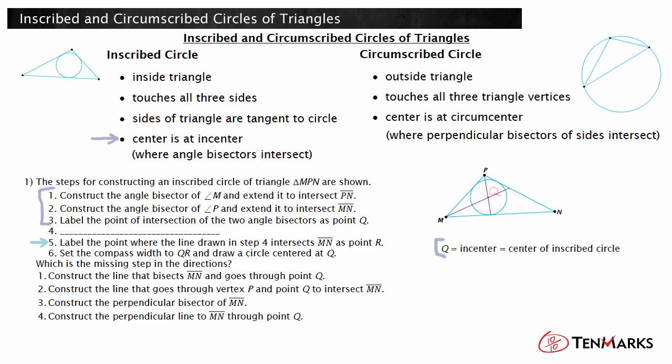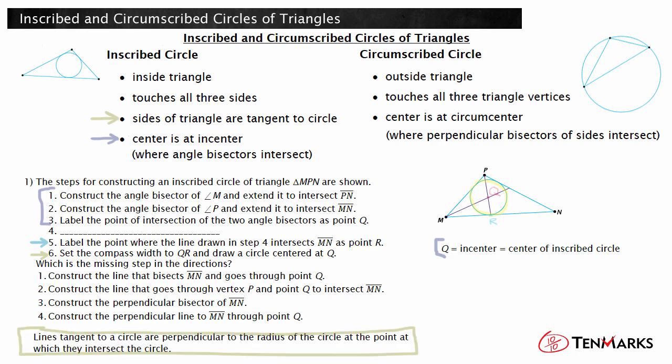Step 5 says to label the point where the line drawn in step 4 intersects MN as point R. This tells you that some sort of line that intersects MN will be drawn in the missing step 4. Step 6 describes drawing the inscribed circle with radius QR and center at Q. You know that point Q is the center and R is on the side MN. The sides of the triangle are tangent to the inscribed circle. Recall that lines tangent to a circle are perpendicular to the radius at the point where they intersect the circle. So, QR must be perpendicular to side MN.